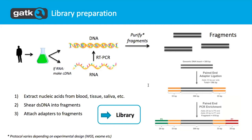First comes the library preparation — actually getting the DNA sample from a person and turning it into something that we can put on a sequencer. The sample is extracted in one way or another, whether it's from saliva, blood, or tissue. If your interest is in RNA, then you will have to use a process called reverse transcriptase PCR to turn it into DNA, because that's what sequencers are actually capable of reading.